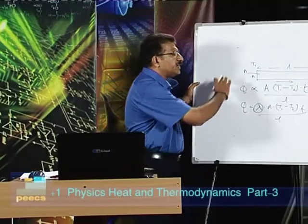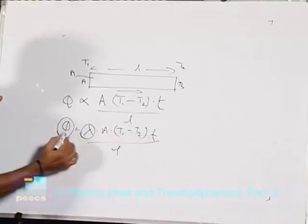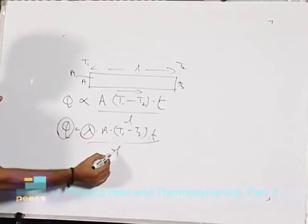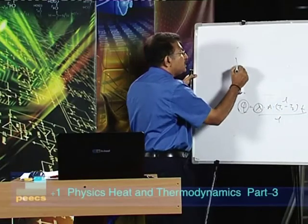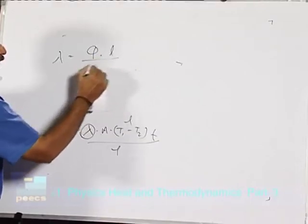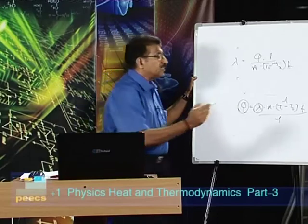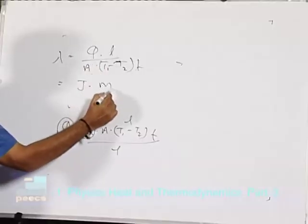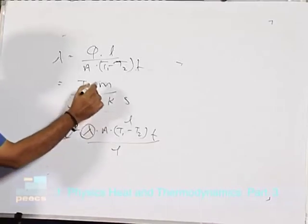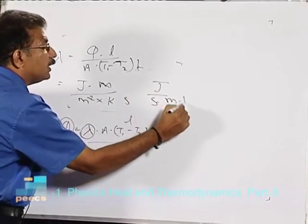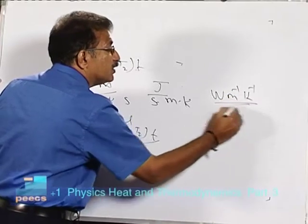Using this single formula, Q = λ·A·(T1 - T2)·t / L, we can answer almost all conduction questions. The unit of lambda is found by writing λ = Q·L / (A·(T1-T2)·t). Substituting units: joule·meter / (meter²·Kelvin·second) simplifies to watt·meter⁻¹·Kelvin⁻¹. This is the unit of thermal conductivity.